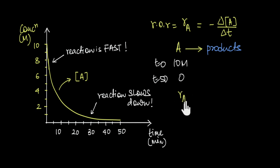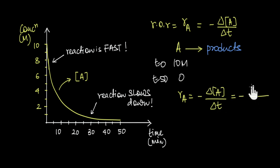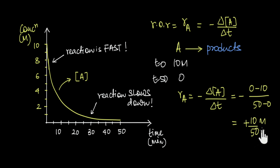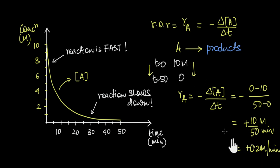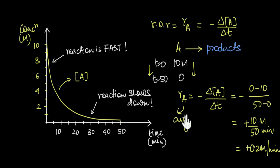The rate of disappearance of A is the change in concentration divided by change in time, which is (0 − 10) / (50 − 0), giving +10/50, which equals 0.2 molar per minute. So 10 molar of A disappears in 50 minutes, giving an average rate of 0.2 molar per minute. Of course the reaction isn't always happening at this rate — sometimes fast, sometimes slow — so what we've calculated is the average rate of disappearance of A over 50 minutes.